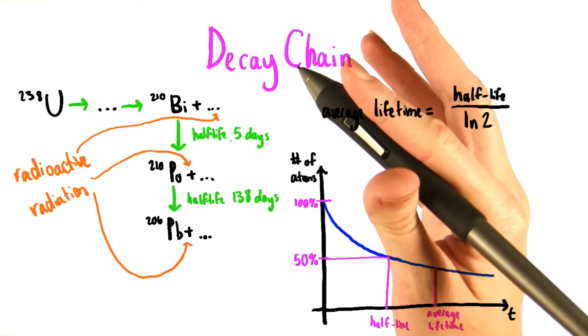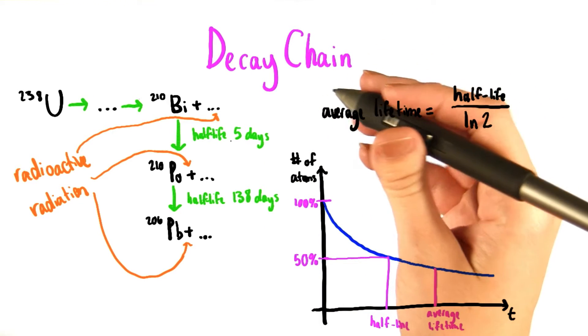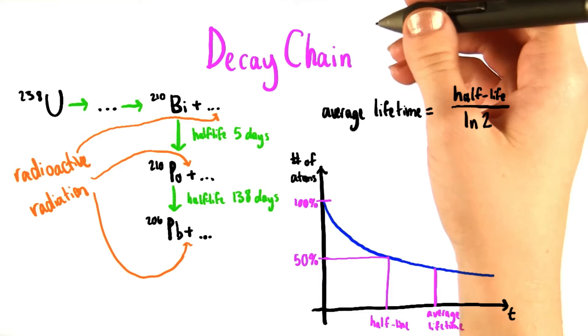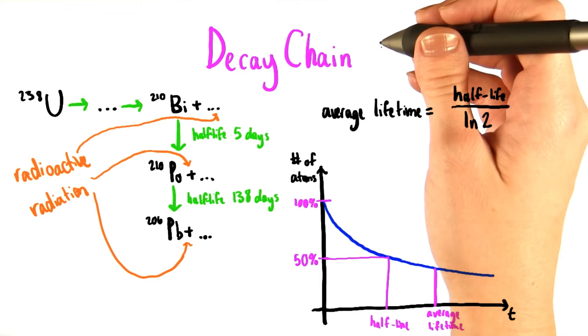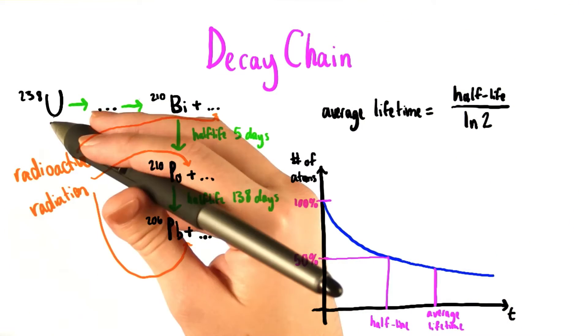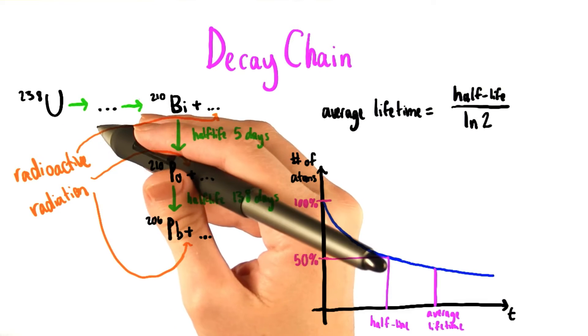For our second final exam problem, we're looking at something that's slightly outside the boundaries of the material that we've looked at so far. We're going to investigate the decay chain of uranium-238. This chain contains a number of different steps from one isotope down to the next.